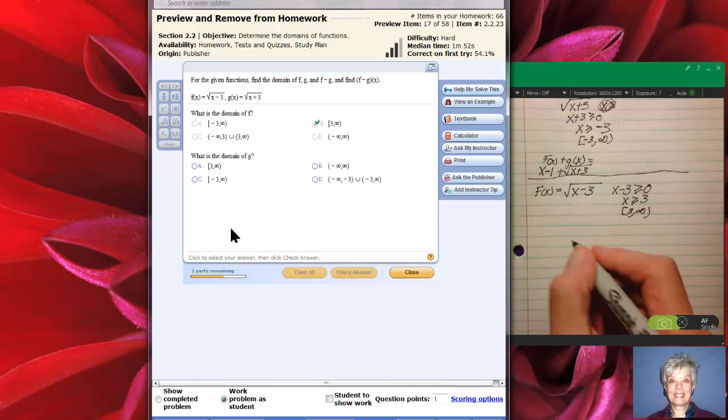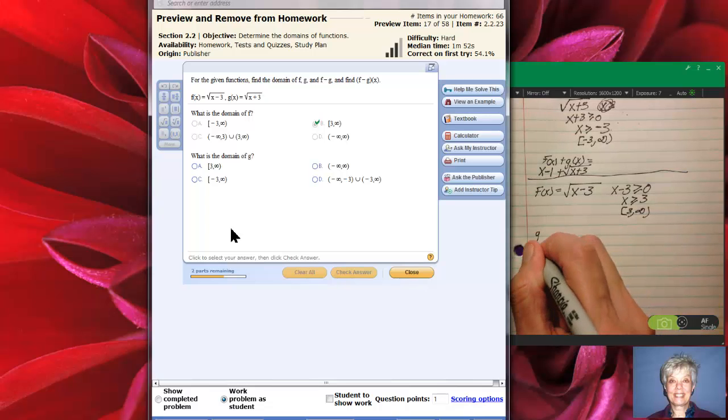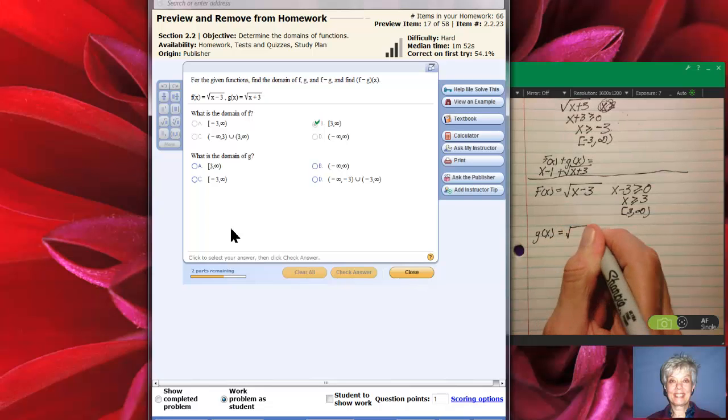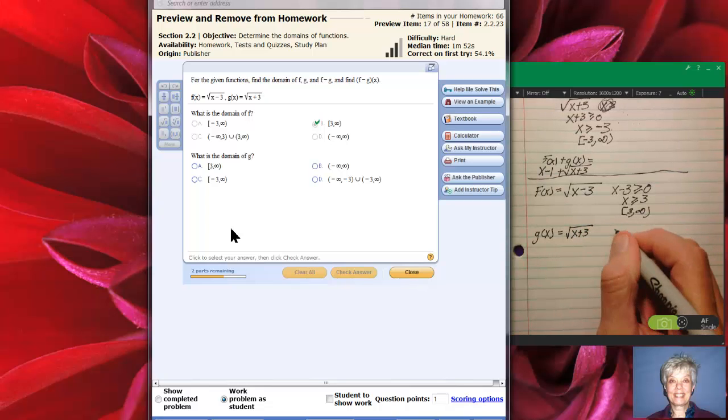Now the domain of g. Well g of x equals the square root of x plus 3 and yes we did do that last time but let's do it again. That means x plus 3, if we're looking for the domain, x plus 3 has to be greater than or equal to 0. So x is going to be greater than or equal to negative 3. So the domain of g of x is going to be negative 3 to infinity. Now let's look at these.